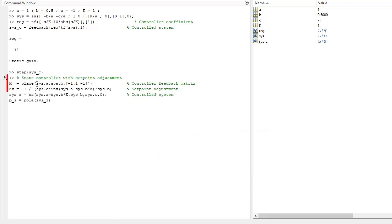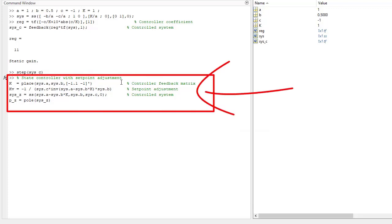After that, we can calculate the state controller with setpoint adjustments, as we did in the last lecture, to calculate the controller feedback matrix, the setpoint adjustments factor, and at the end, the control system.